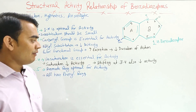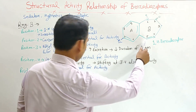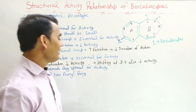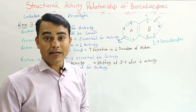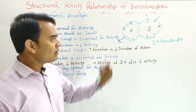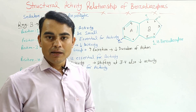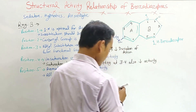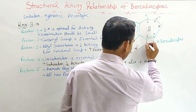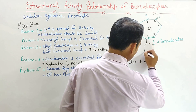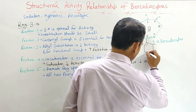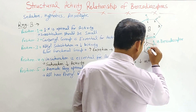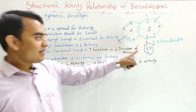Position 5 should have an aromatic ring — that is optimal for activity. All the drugs of benzodiazepine mainly have a phenyl ring at position 5. If a phenyl ring is attached here, it becomes ring C.